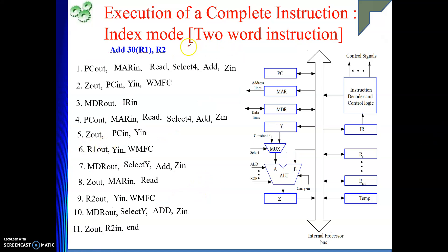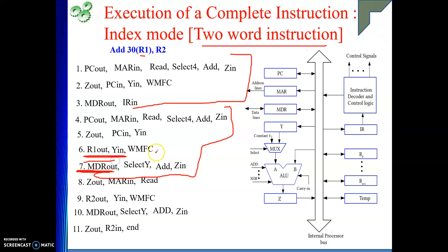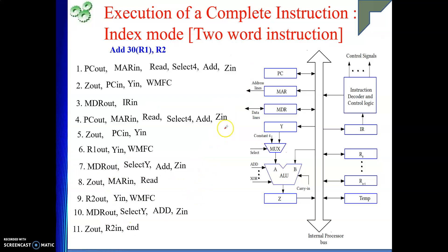To summarize: for a two-word instruction, in the first part we get the opcode, addressing mode, and other information; in the second part we get the offset (the address field). While waiting for the 30 from memory, R1 is placed in the Y register. When the 30 arrives, we select Y and perform the addition to get the effective address. That address goes to MAR for the memory read, and R2 is pre-loaded into Y. Once data comes from memory, we perform the final addition and send the result to R2. If you are getting value from my explanations, please like my videos and subscribe to my channel. Thank you.